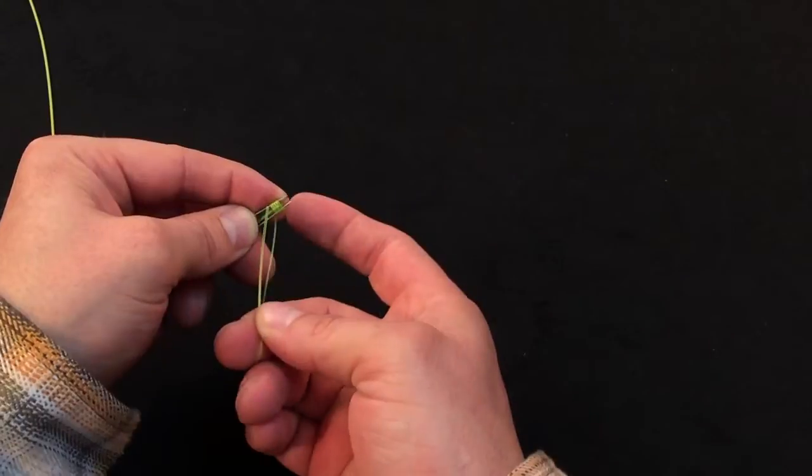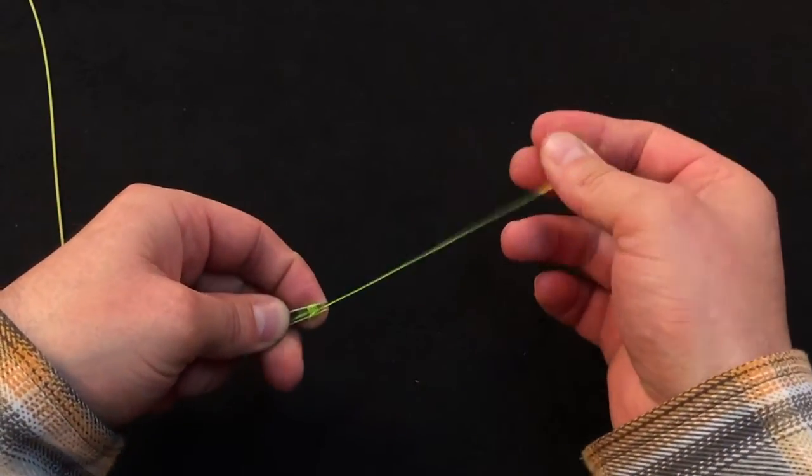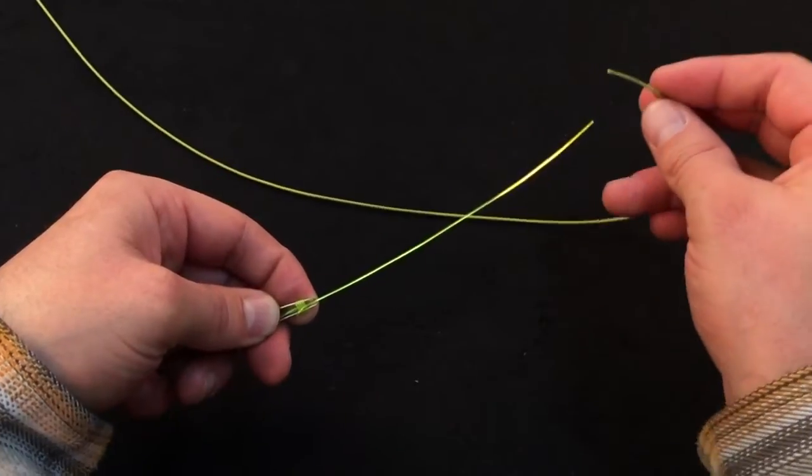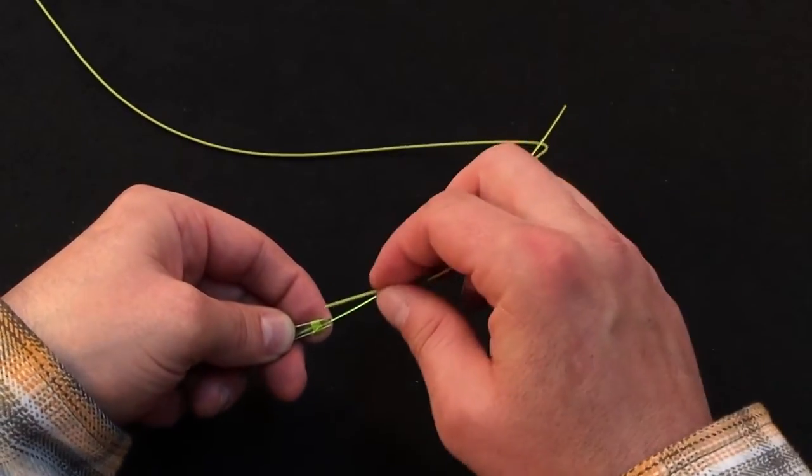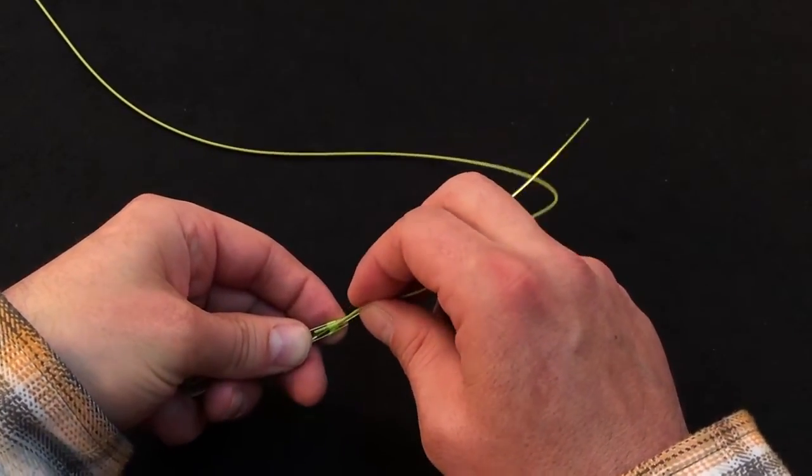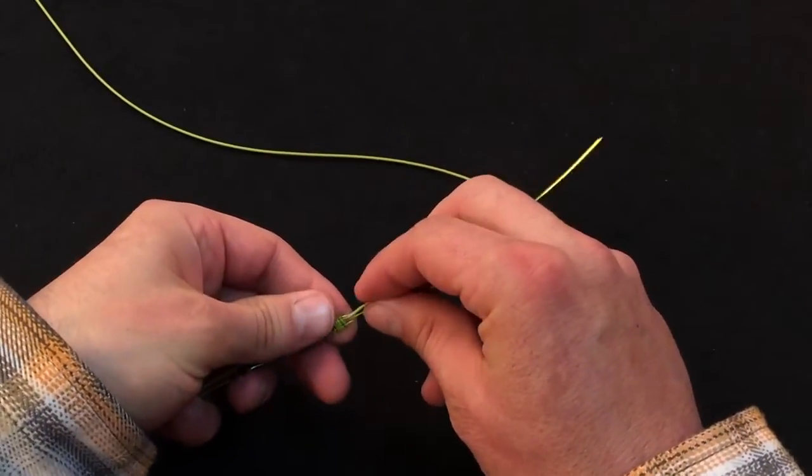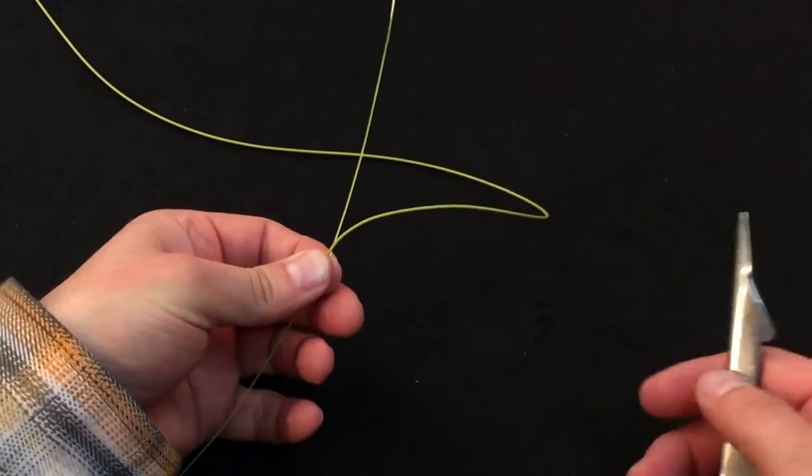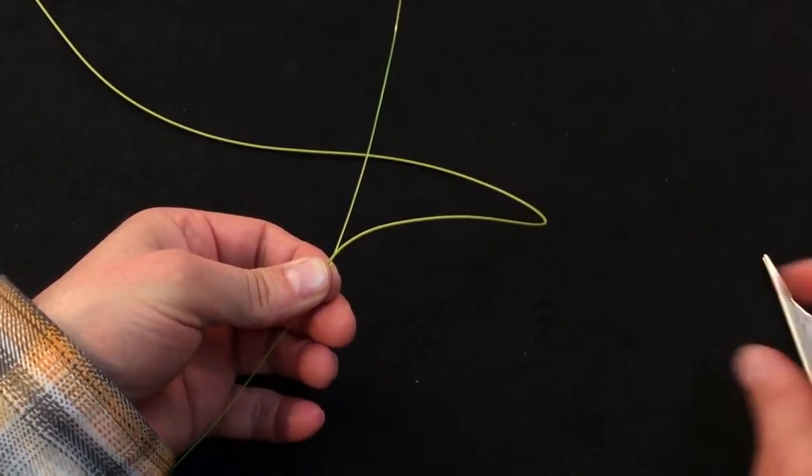Then we'll take and run the butt section back down the gutter, exiting the forward end of it. Then we'll take our fly line, insert that into the gutter of the tie fast tool, and we're ready to remove the tie fast tool. We're essentially done with it at this stage of the game.